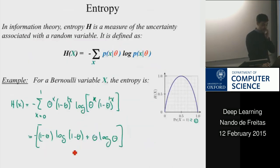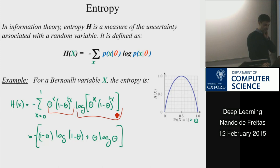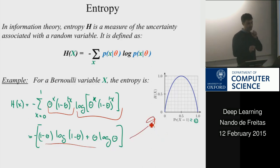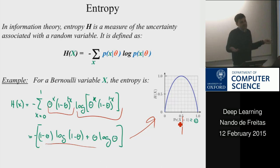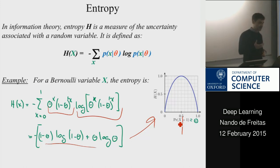We also saw how to compute the entropy of a Bernoulli. If you plug a Bernoulli into the expression for entropy, −P log P, we get an expression that is maximum at the value of 0.5. So when you really don't know whether the coin is going to be heads or tails, that's when you have maximum uncertainty. Entropy is a measure of uncertainty.